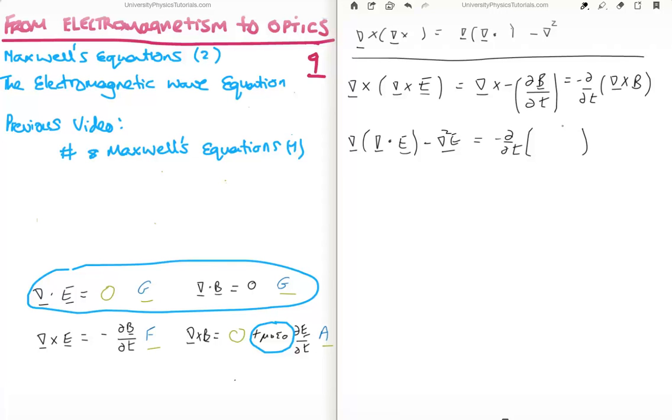Now on the right hand side we have minus del del t and we're going to sub in Ampere's law. So it's going to be mu zero epsilon zero the time rate of change of the electric field. Now if we look at Gauss's law for electric fields we see that this term here goes to zero. So what we're left with is minus Laplacian of E is equal to minus mu zero epsilon zero del squared E del t squared.